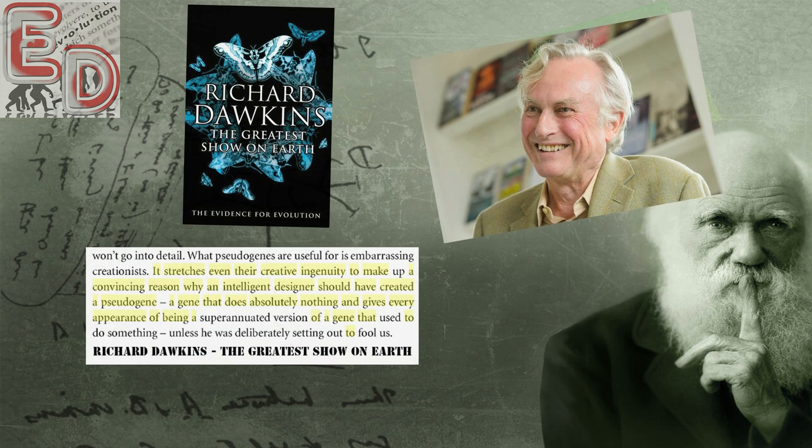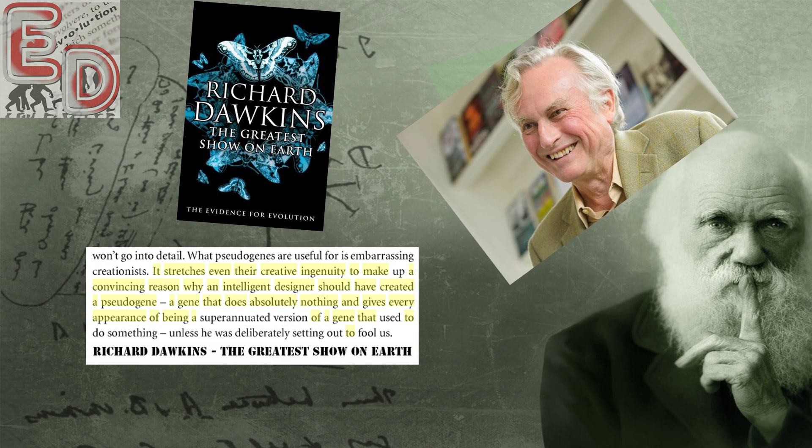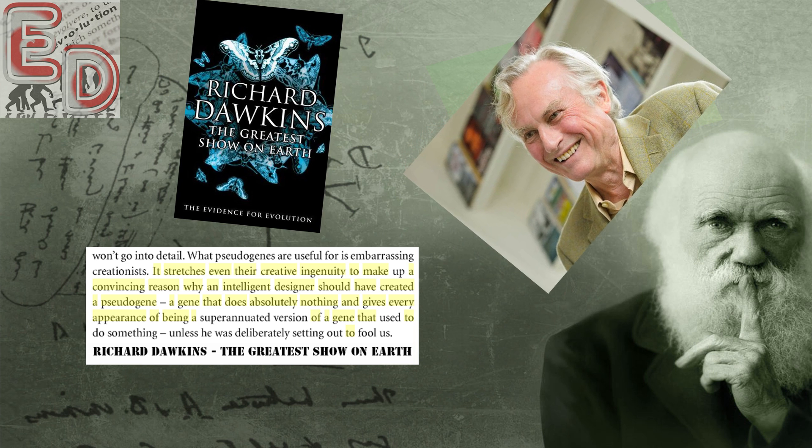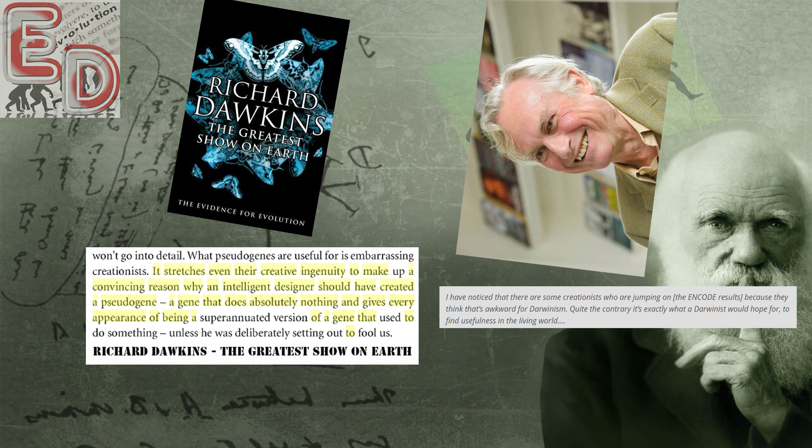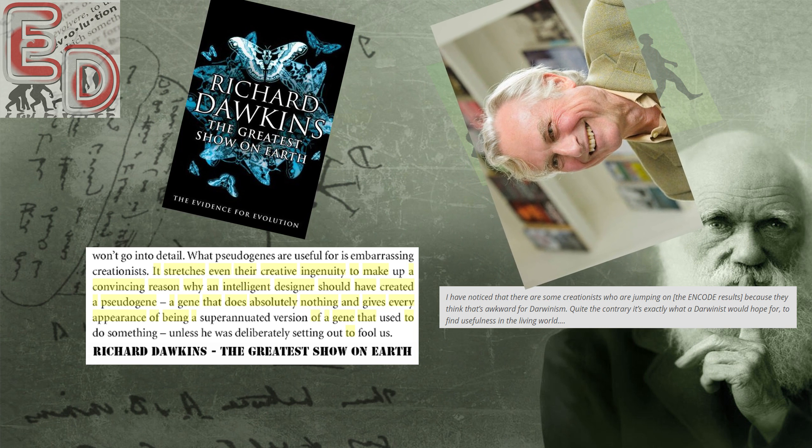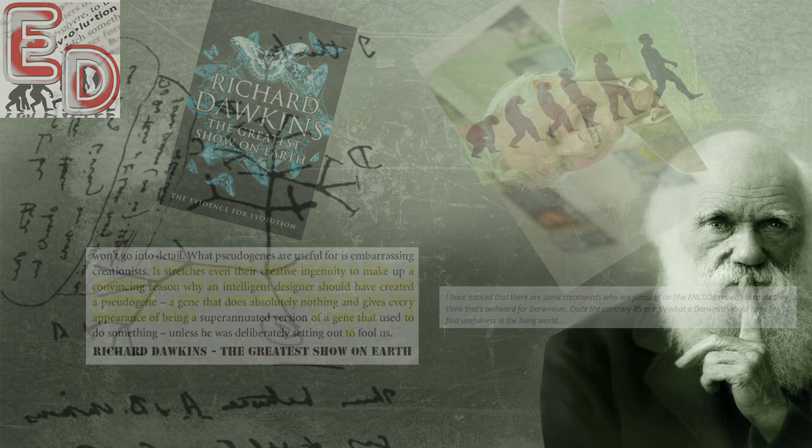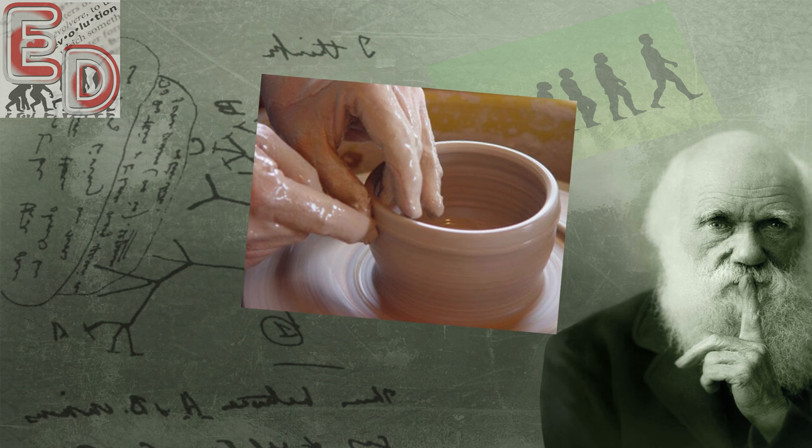Dawkins can't have it both ways. Before junk DNA was shown to have function, he used junk DNA as evidence for evolution and against creation. Now that junk DNA is shown to have important function, he claims that evolution would have anticipated this all along. Apart from being extremely intellectually dishonest, this once again proves that evolution is a malleable framework that can explain any evidence, even if it's self-contradictory.